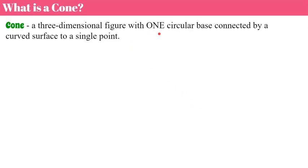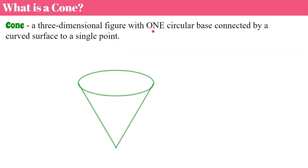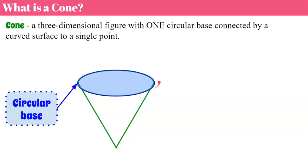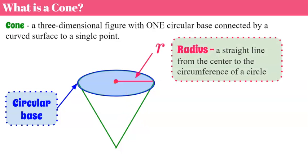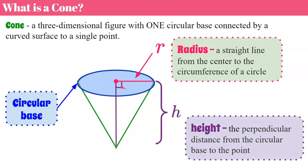First, let's talk about what a cone is. A cone is a three-dimensional figure with one circular base that is connected by a curved surface to a single point. So unlike a cylinder, which has two circular bases that are parallel. Here's an image of a cone. We have our circular base, which is our circle. Imagine the paper that goes around a sugar cone. Here's our radius — it goes a straight line from the center of the circular base to the outer edge, which is our circumference. A cone also has height, and it goes from that single point where the curved surface meets all the way up to the base, which is perpendicular.